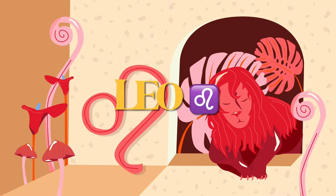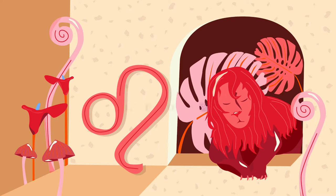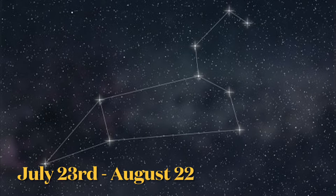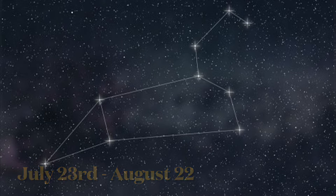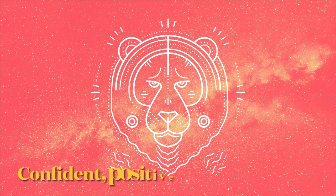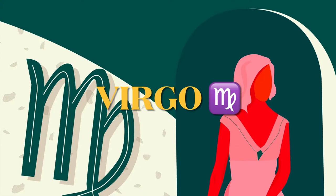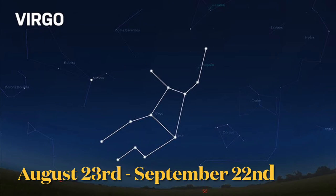The next sign is Leo, born between July 23rd and August 22nd. These signs are represented by the lion and are known for being confident, positive, and natural leaders. Next we've got Virgo, born between August 23rd and September 22nd.